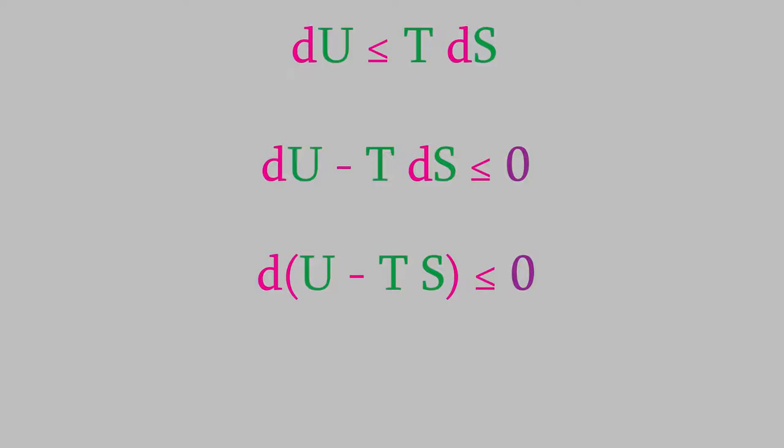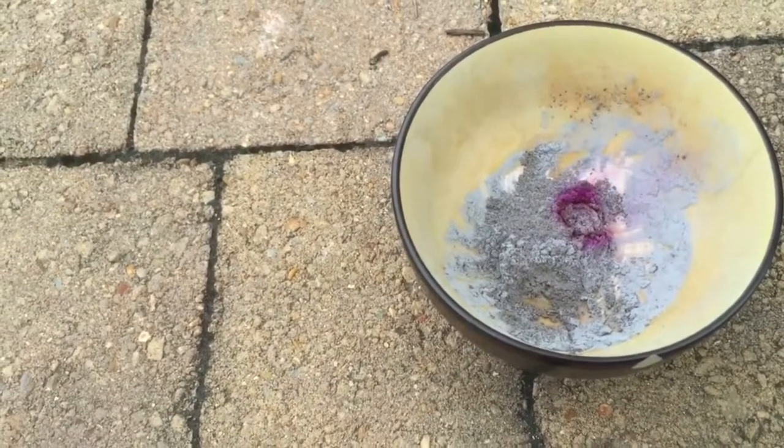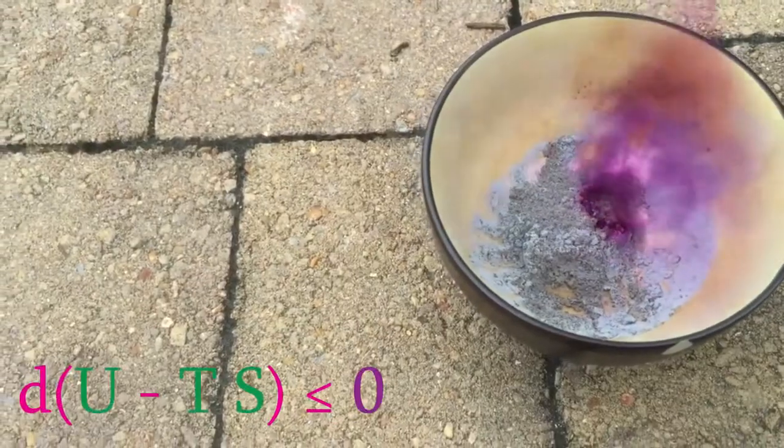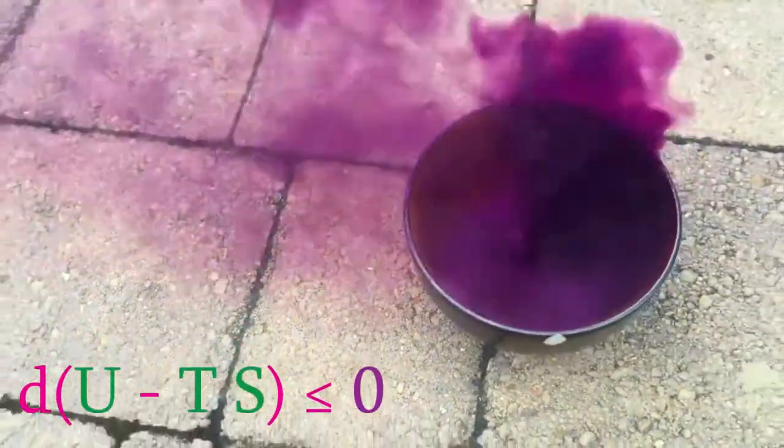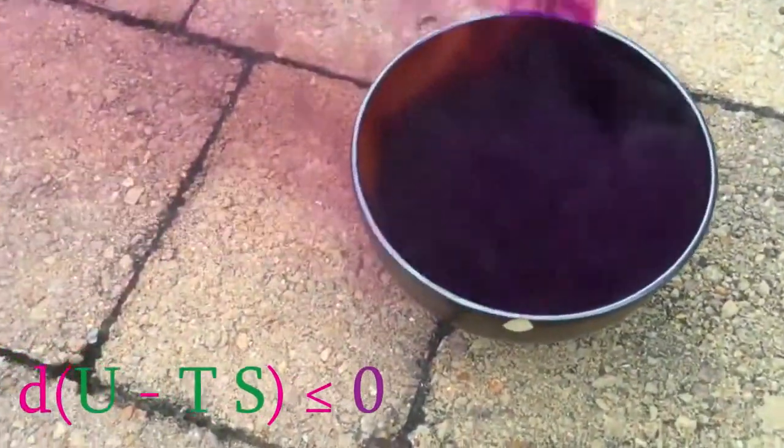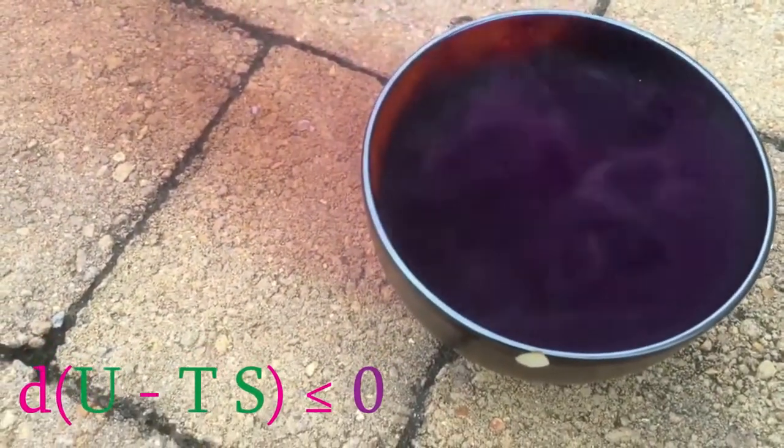In other words, a process like a chemical reaction will be spontaneous if the change in U minus T times S is a negative number, and it'll be zero if the reaction is at equilibrium.